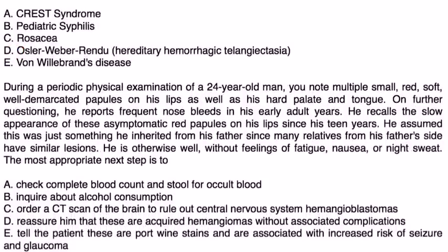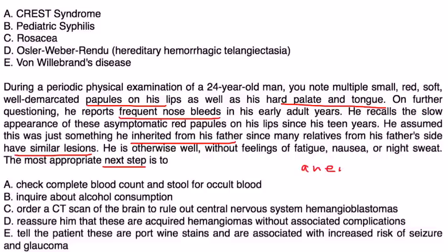Next question. During a periodic physical exam of a twenty-four-year-old man, you note multiple small red, soft, well-demarcated papules on his lips as well as his hard palate and tongue. On further questioning, he reports frequent nosebleeds in the early adult years. He recalls the slow appearance of these asymptomatic red papules on his lips since his teen years. He assured that this was something he inherited from his father, since many relatives from his father's side have similar lesions. He's otherwise well, without feelings of fatigue, nausea, or night sweats. The most appropriate next step is? Well, he may have some anemia, so a very simple test is just to do a CBC, and that's choice A. Oftentimes, the simplest one is the one to do first. CT is very expensive and probably wouldn't be indicated at this time.